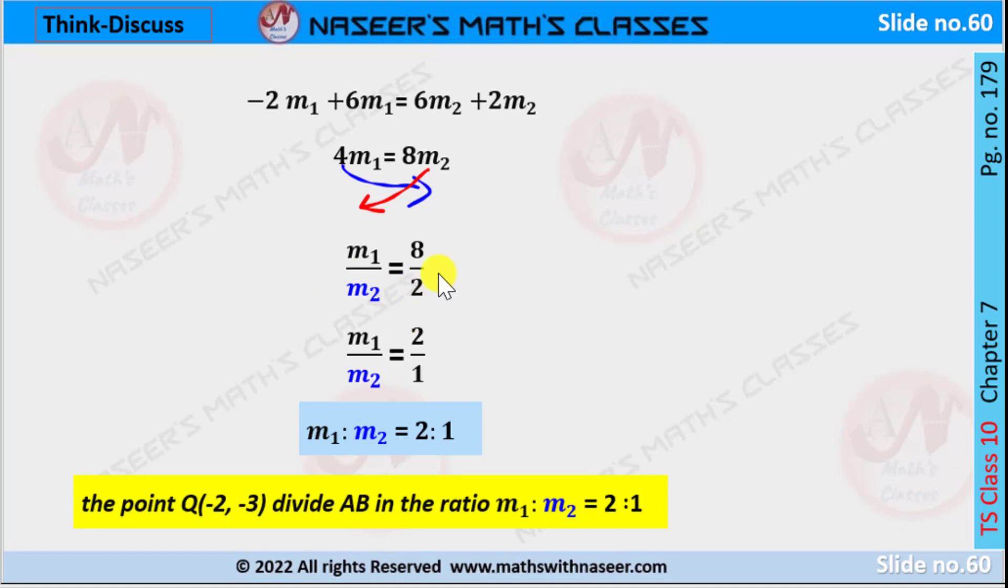Then we can write it as m₁/m₂ equals 8/2. Now we cancel: 2 ones are 2, 2 fours are 8, then we can take 2/1 in RHS. Therefore m₁/m₂ is written as 2/1.